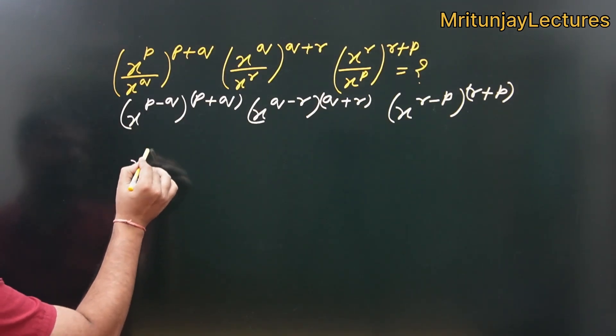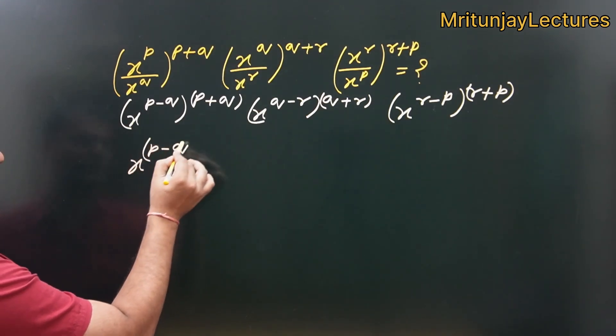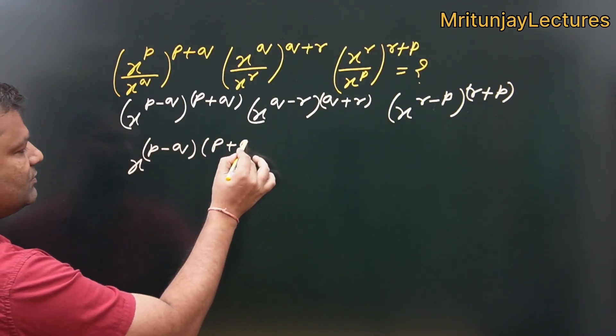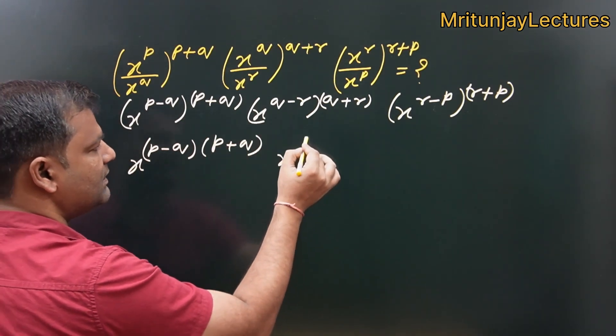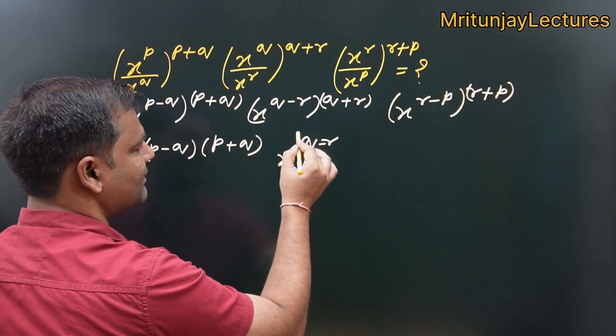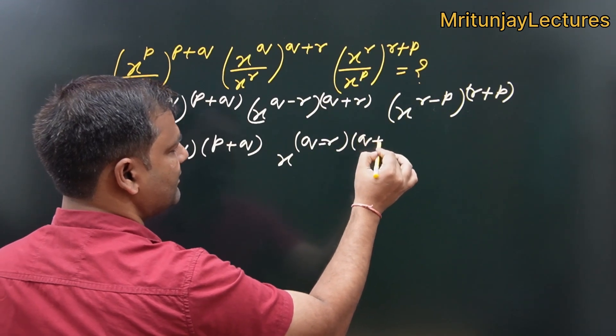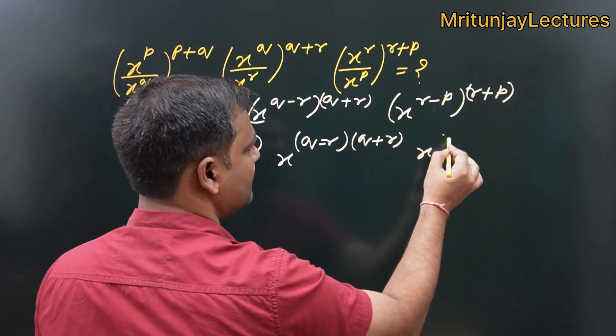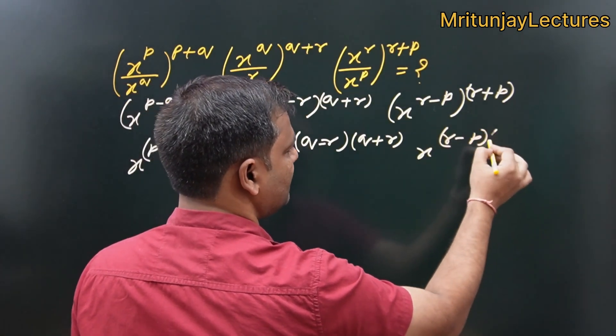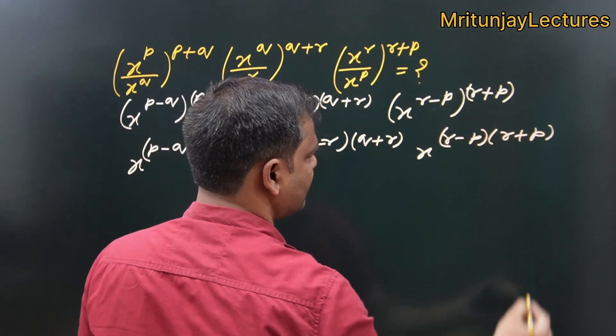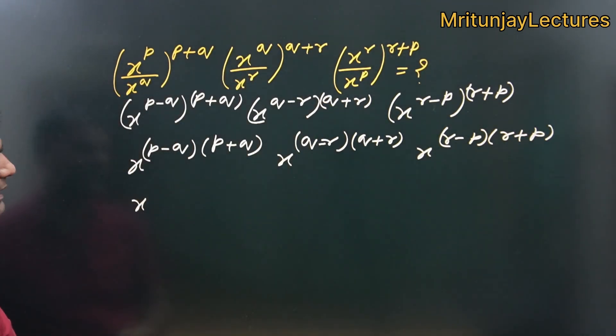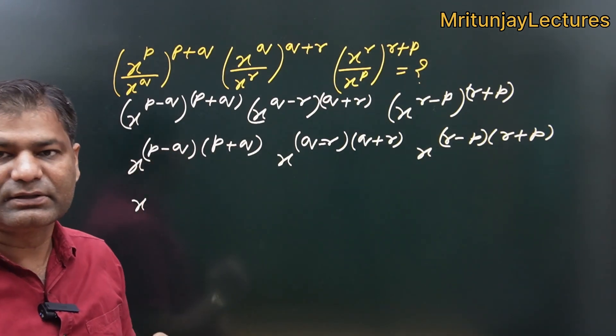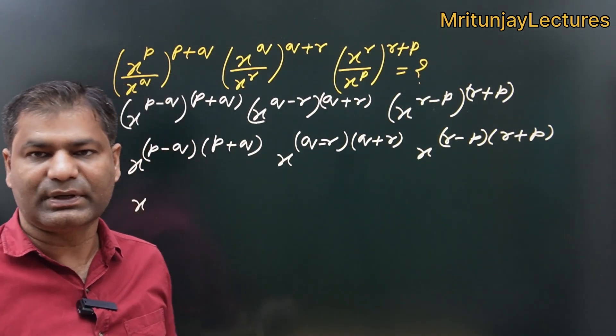That property one written p minus q into p plus q. Here r minus p into r plus p. So, I know that here x minus y into x plus y. So, basically x square minus y square.